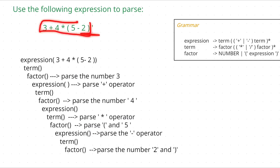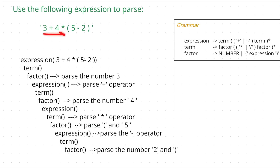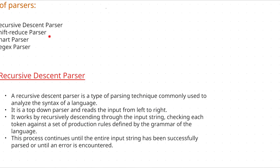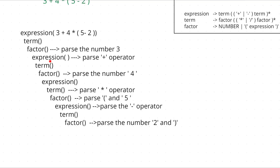By this example you can observe that it is a top-down, left-to-right parser. This is how recursive descent parsing works. In the next video I will explain the shift-reduce parser. If you have any doubts, please comment in the comment section and join our Telegram channel to receive the latest uploads. Thank you for watching — stay tuned.